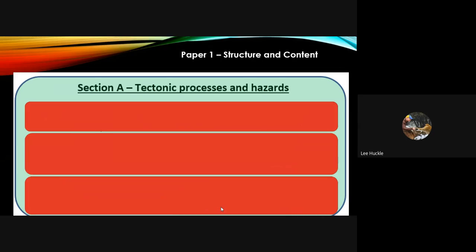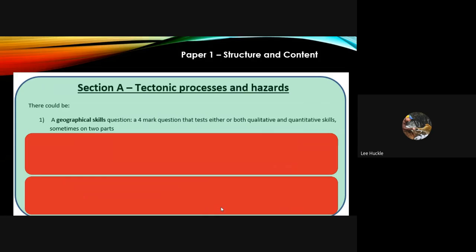Now let's break down each of those sections and look at section A first, which focuses on tectonic processes and hazards. I'm going to go through the types of questions that we know will definitely appear, and those that could appear. In section A, there could be — not guaranteed — a geographical skills question worth about four marks. If it appears, it will test either qualitative or quantitative skills, or sometimes both.